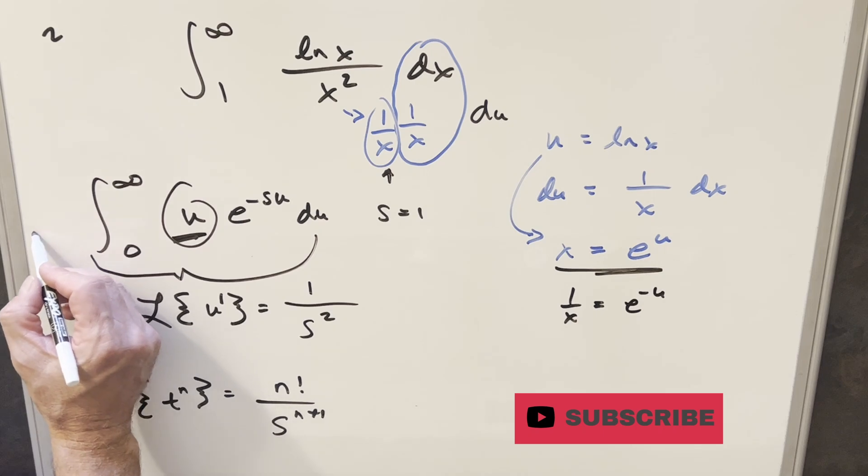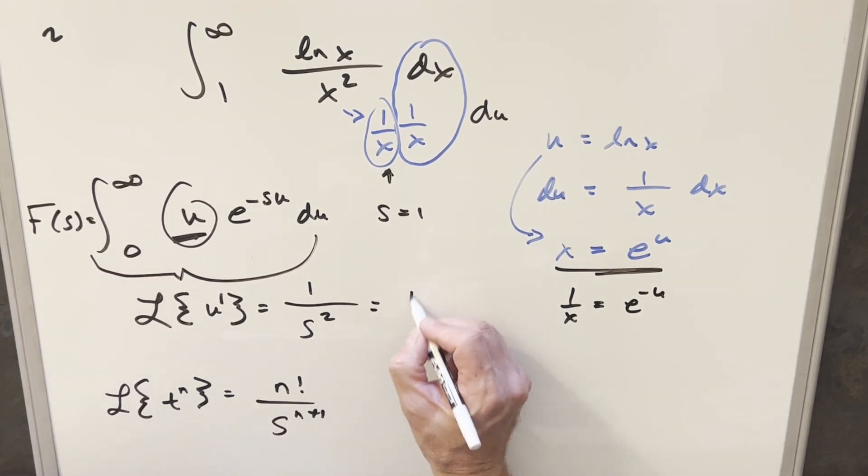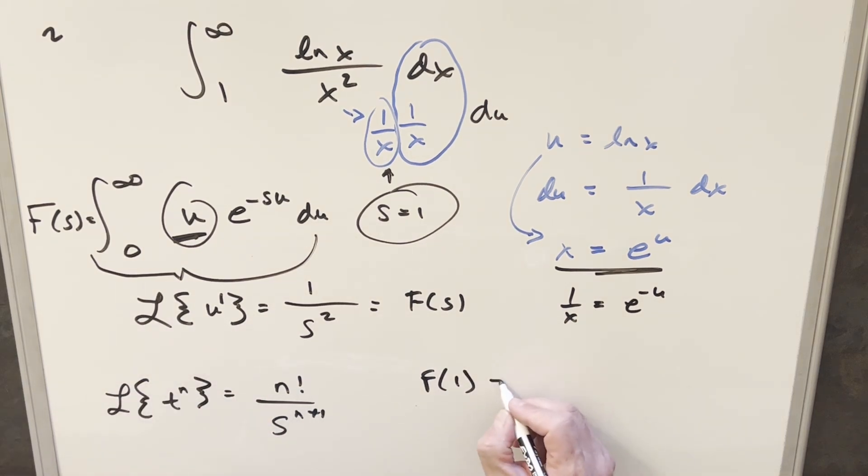So what we've done is we've set this up as a function in terms of s. This right here is our function in terms of s. But we know what our s value is. So all we need to do to finish this off is just find the value for f of 1. Plugging in here, this is 1 over 1 squared, and that's just 1.